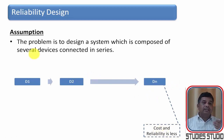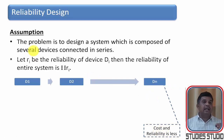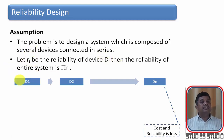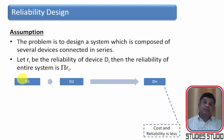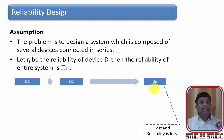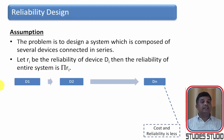In a series system, if r_i is the reliability of device i, then the reliability of the entire system is the product of all individual reliabilities. So if r1 is the reliability of D1, r2 is the reliability of D2, and rn is the reliability of Dn, then the total system reliability is r1 × r2 × ... × rn.